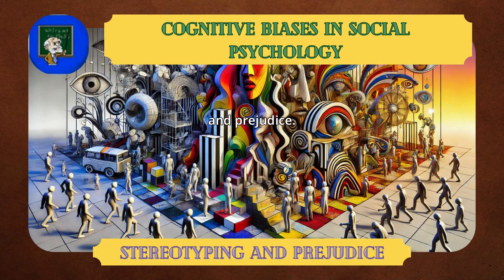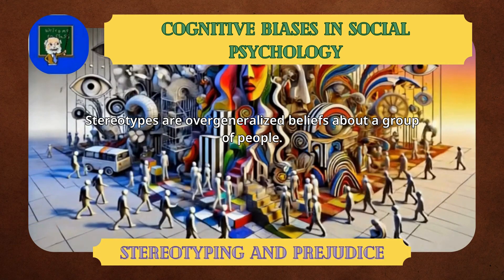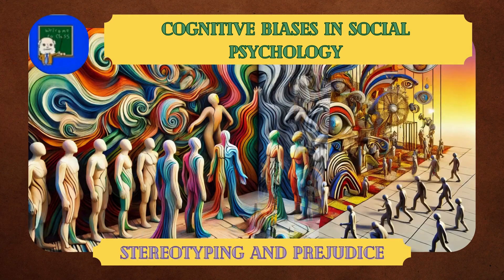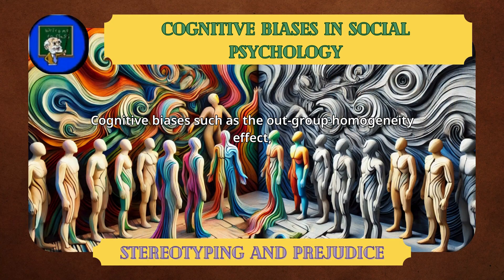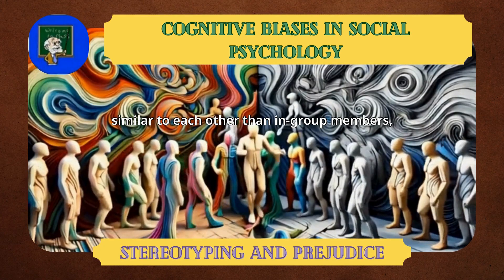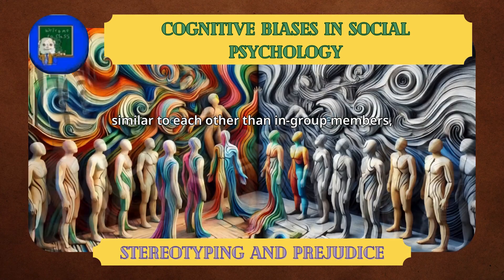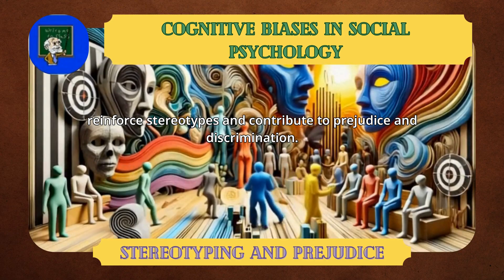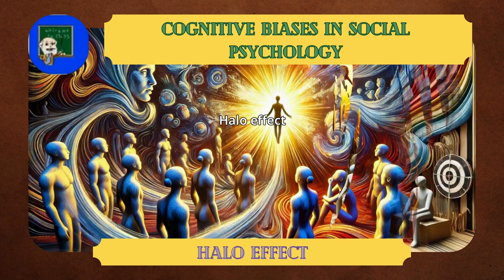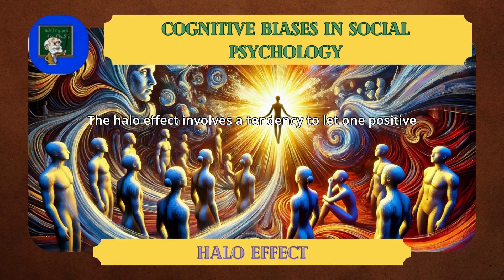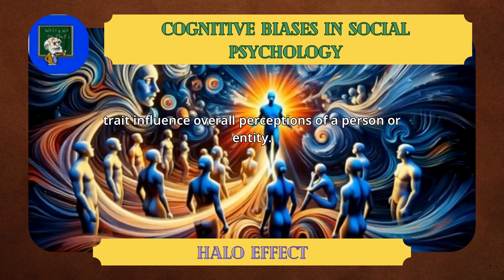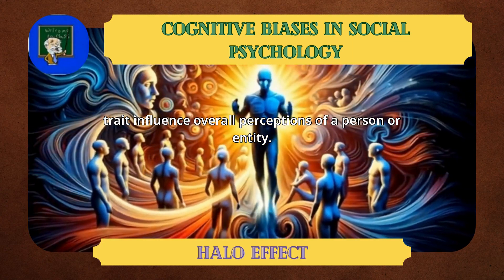Stereotyping and Prejudice: stereotypes are overgeneralized beliefs about a group of people. Cognitive biases such as the out-group homogeneity effect — perceiving members of an out-group as more similar to each other than in-group members — reinforce stereotypes and contribute to prejudice and discrimination. Halo Effect: the halo effect involves a tendency to let one positive trait influence overall perceptions of a person or entity.